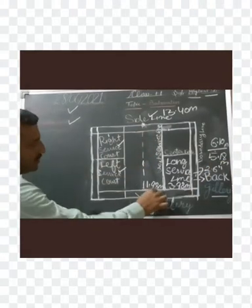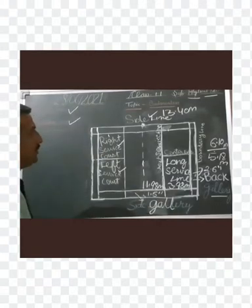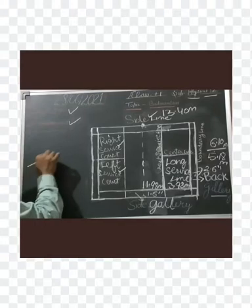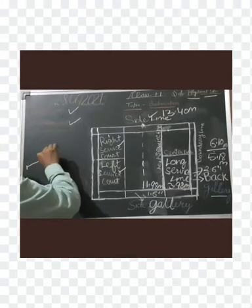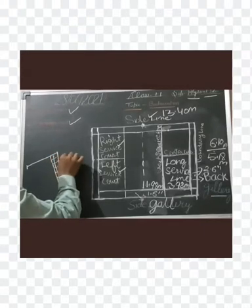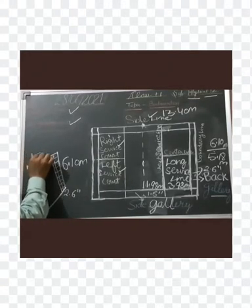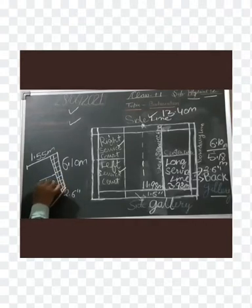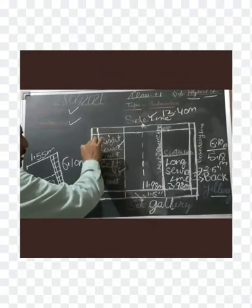Now we will discuss the net. There are two poles used on the ground with the net. The length of the net is 6.10 meters and width is 2.6 feet. The height of the pole is 1.55 meters and the height of the net from center is 1.52 meters. All the court lines are 4 centimeters wide.